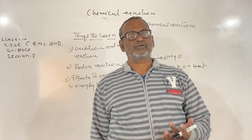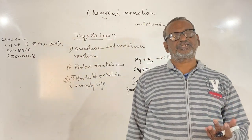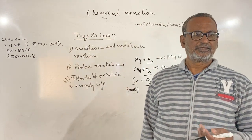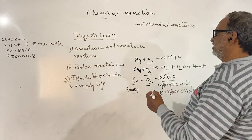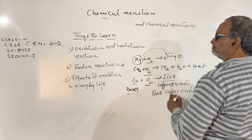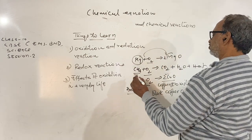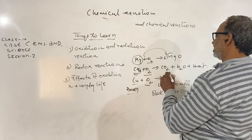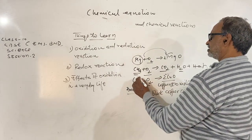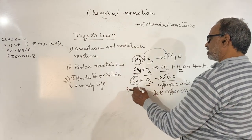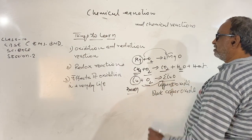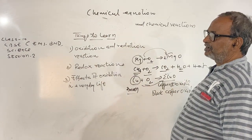The substance to which oxygen is combined is said to be oxidized. So in these reactions we can say that magnesium is oxidized to magnesium oxide, methane or natural gas is oxidized to carbon dioxide and water, and copper is oxidized to copper(II) oxide, which is black in color.